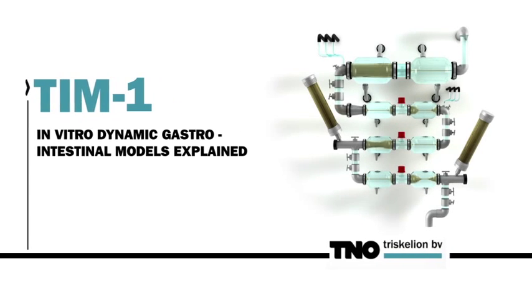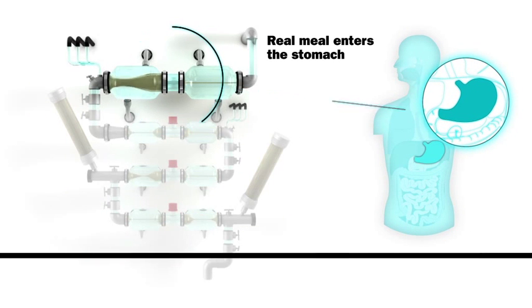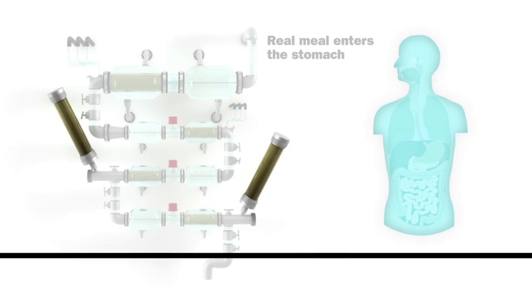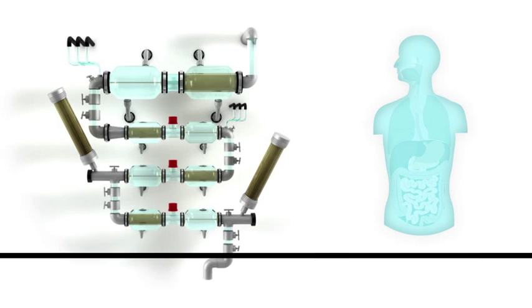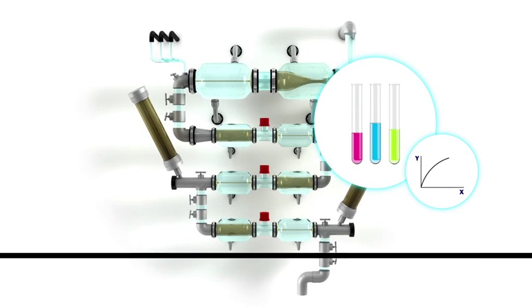TIM1. Here we see the stomach and the small intestine divided into three parts. Left and right of the small intestine, we can see the dialysis systems, removing nutrients to mimic the real-life situation. At all stages, we're able to take samples to investigate their composition.